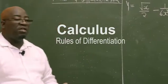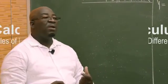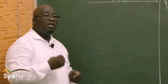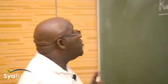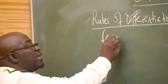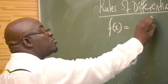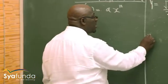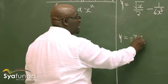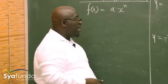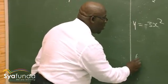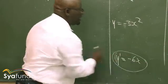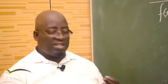Let's look at the rules of differentiation. Fortunately for us at this level, we only have one rule. For example, if you've got f(x) = ax^n — remember the first problem we did: y = -3x², which we solved using the first principle until we came to the solution y' = -6x.